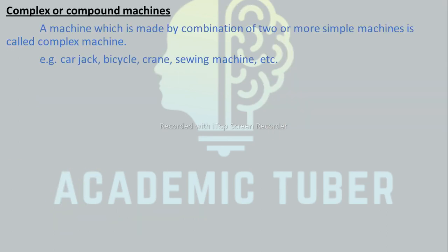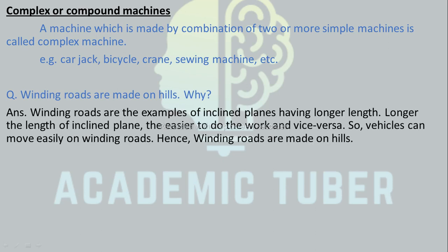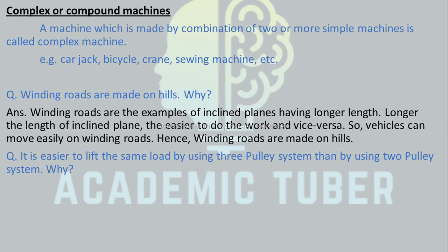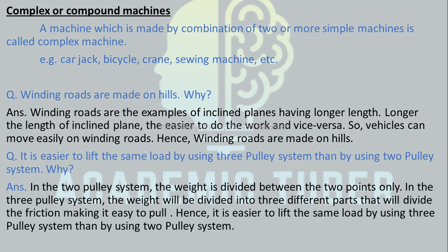Complex or Compound machine: a machine which is made by a combination of two or more simple machines is called a complex machine. Examples: car jack, bicycle, crane, sewing machine, etc. Winding roads are made on hills because winding roads are examples of inclined planes having longer length. The longer the length of an inclined plane, the easier it is to do the work, so vehicles can move easily on winding roads. It is easier to lift the same load using a 3-pulley system than a 2-pulley system because in a 3-pulley system the weight is divided into 3 parts, reducing the effective friction and making it easier to pull.